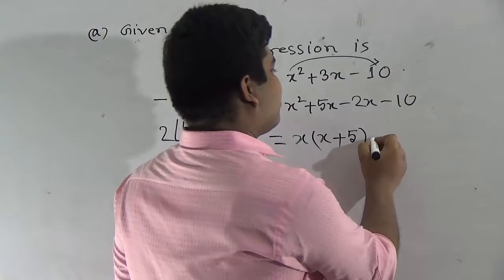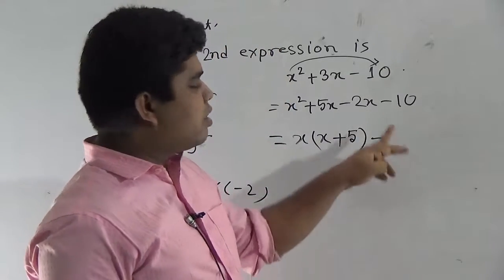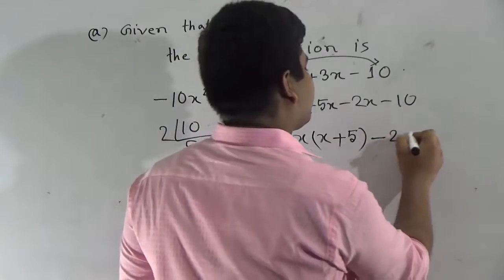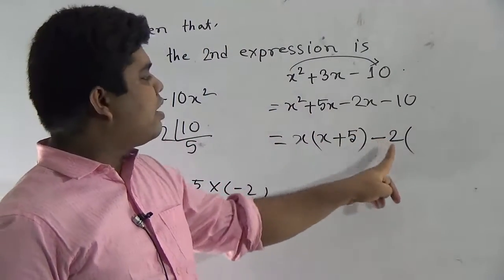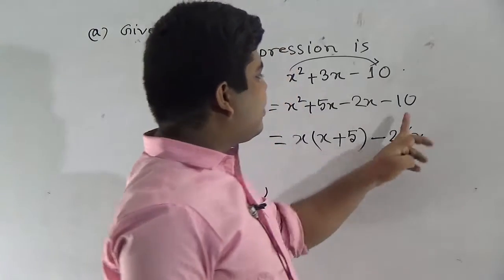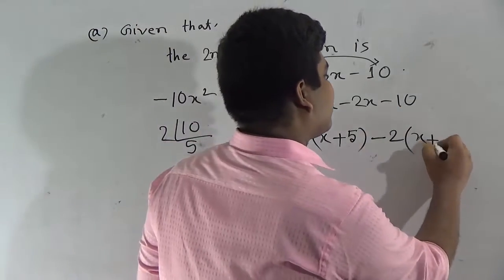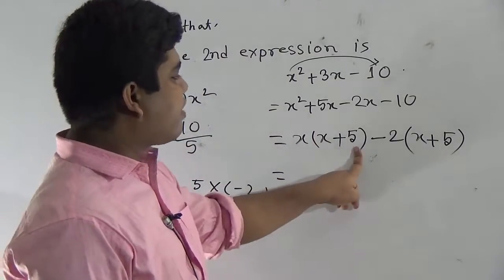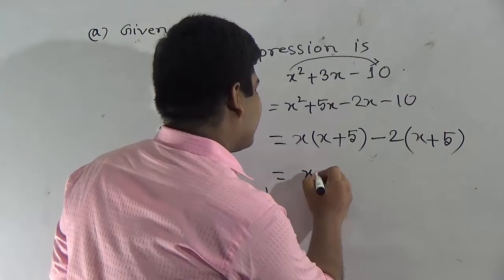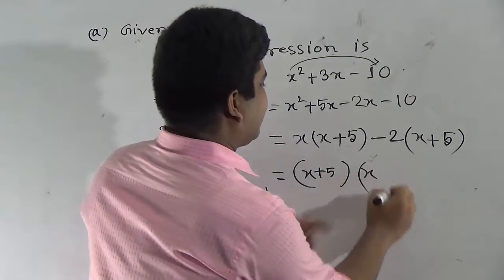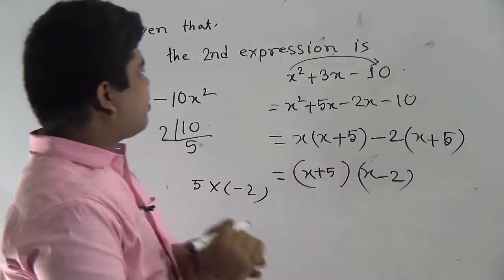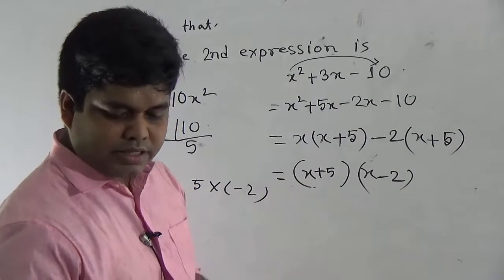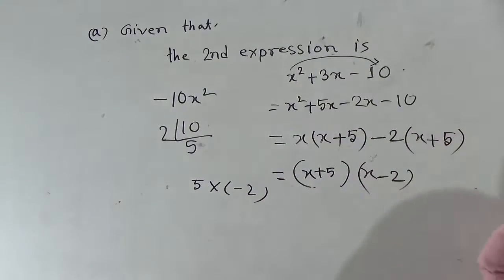Next, minus 2x minus 10. From these two terms, which number is common? Notice: minus 2 is present in minus 2x and also in minus 10. So we take minus 2 as common. We divide minus 2x by minus 2 and get x, and divide minus 10 by minus 2 and get plus 5. Now from the whole expression, x plus 5 is common. We take x plus 5 as common; left x and left minus 2. So after resolving x squared plus 3x minus 10 into factors, we get (x plus 5) into (x minus 2). So it is the answer.